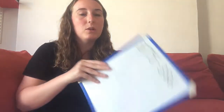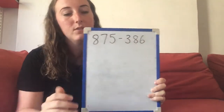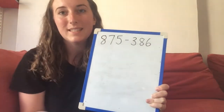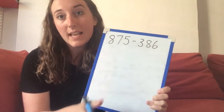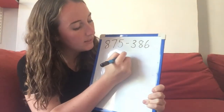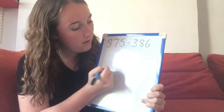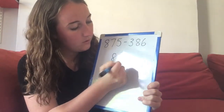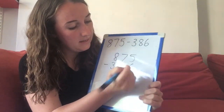This time we're going to do an example with two exchanges. My question is 875 take away 386. Again I'm going to lay it out exactly as before: 875 take away 386.